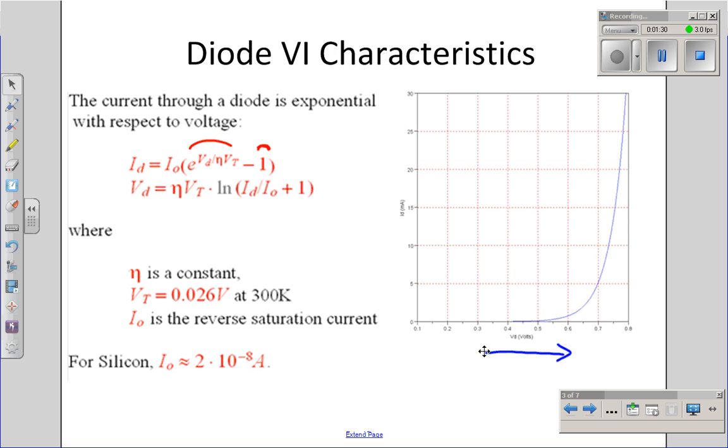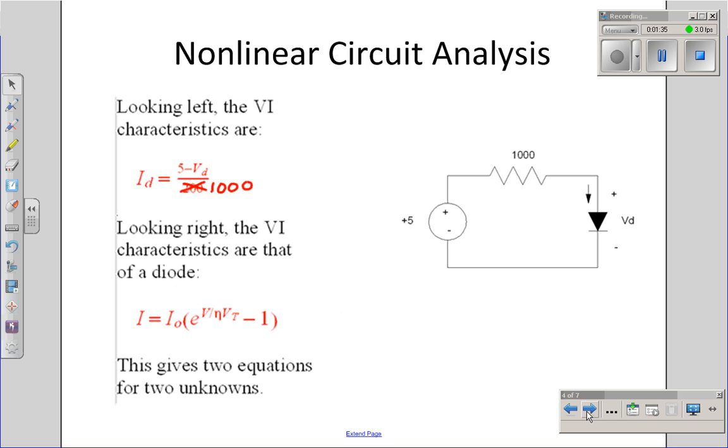That creates a problem. If I have a circuit with a diode, I have a nonlinear set of equations to solve. For example, suppose I've got a 5-volt source driving a 1000-ohm resistor driving a diode. From this, find the voltage and current through the diode.